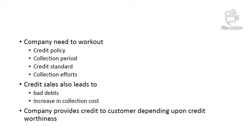The company also needs to make collection efforts — after selling products on credit, the company will have to follow up, appoint collection staff who go to customers, collect cheques, and deposit them in the bank. We also need to find out the remaining balance from each customer. Credit sales also lead to bad debts, and we need to consider the history of credit sales. For example, if sales are one lakh and we receive ninety-five thousand rupees, five thousand rupees is bad debt, so we need to calculate the bad debt amount and then decide credit terms accordingly.